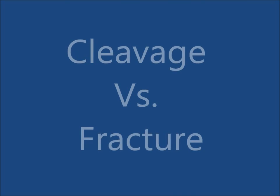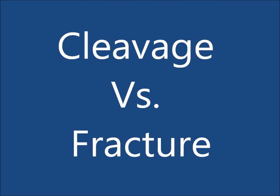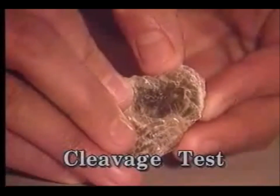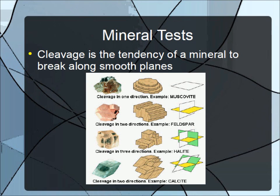When a mineral breaks, it can do so in one of two ways: it can cleave, or it can fracture. Cleavage is the tendency of a mineral to break along flat planes and straight lines. A mineral may have cleavage in only one direction, such as mica, which breaks into thin sheets; two directions, like feldspars; or three planes of cleavage, creating cubes or rhombohedrons. Galena and halite both have three planes of cleavage and break into small cubes.